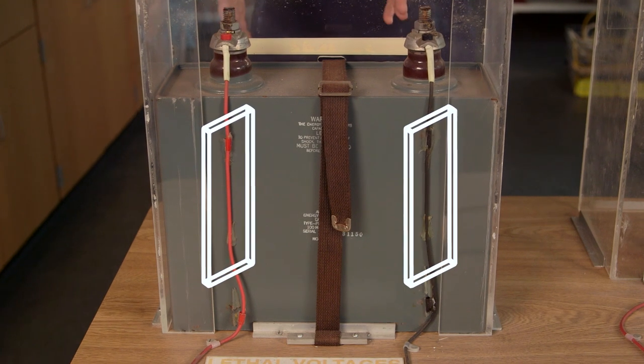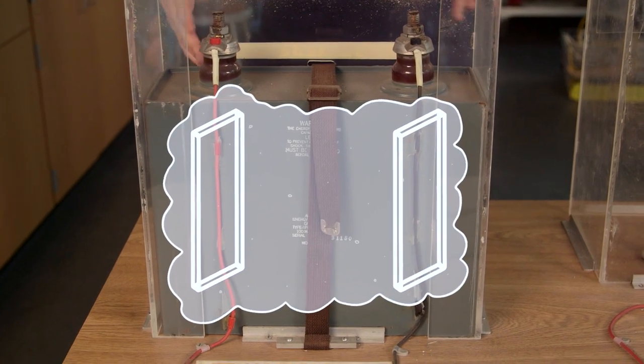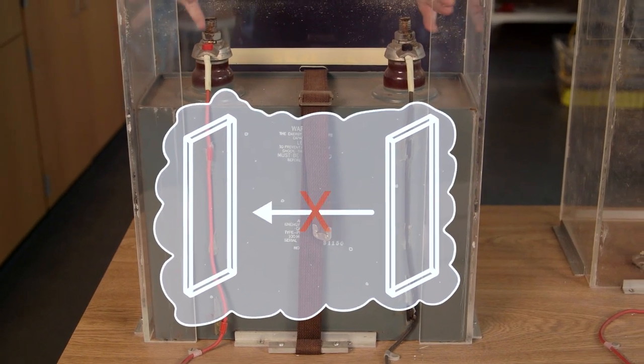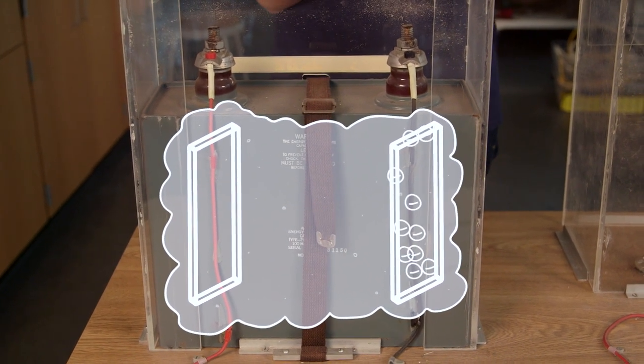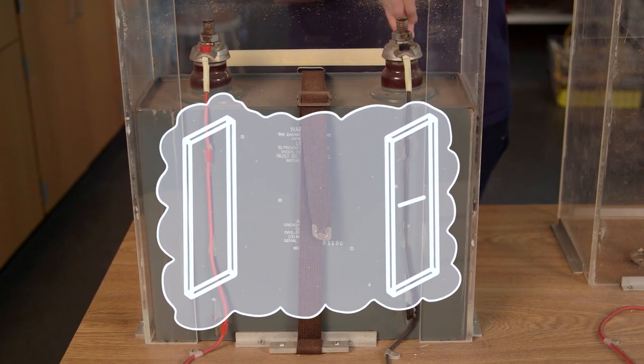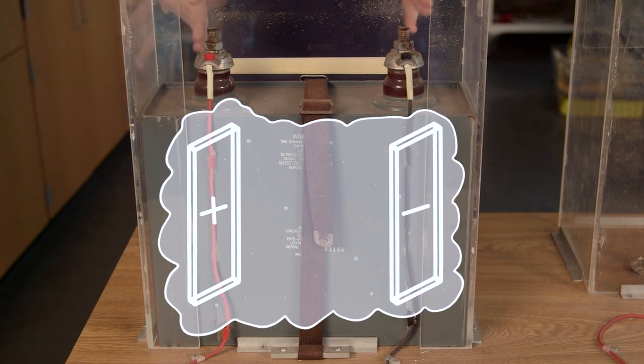Now a capacitor is two metal plates in an insulating oil. Charge can't flow through the oil from one plate to another, so it builds up on one of the plates, charging it negatively. The other plate is left with a positive charge.